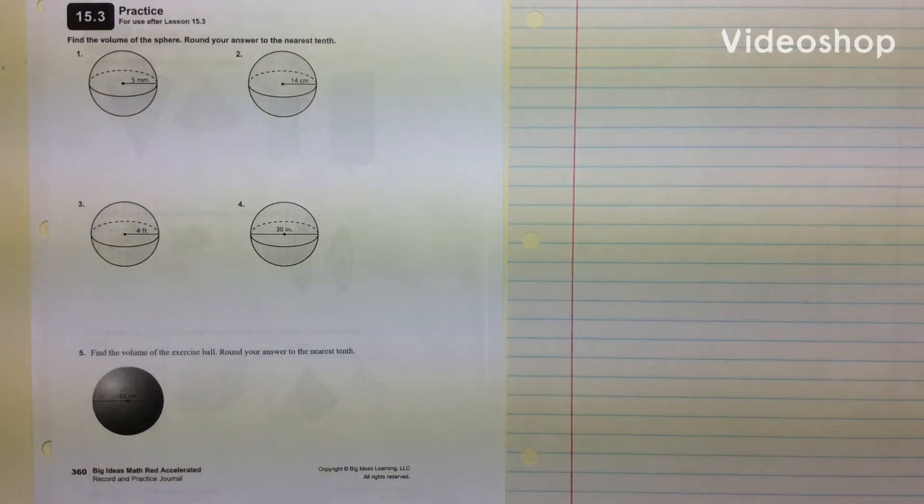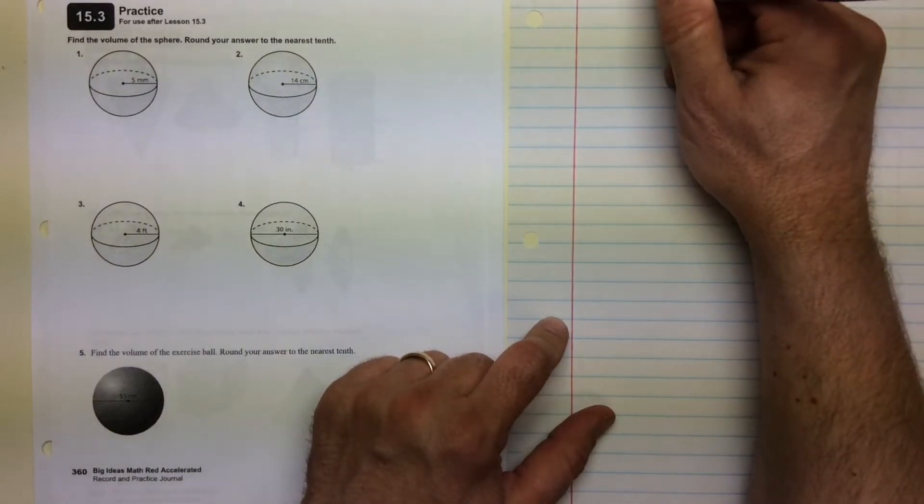Alright, this is journal page 360, section 15.3, which is the volume of spheres. We'll be using this formula.